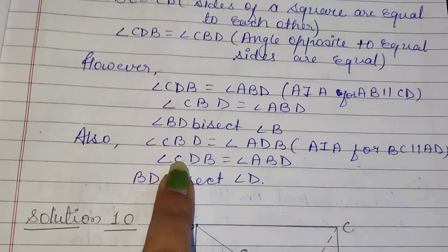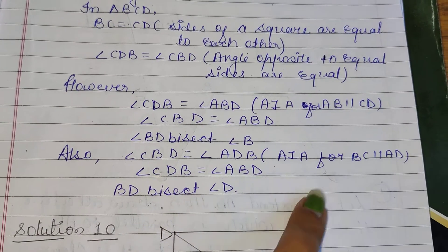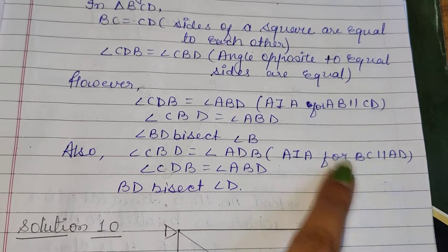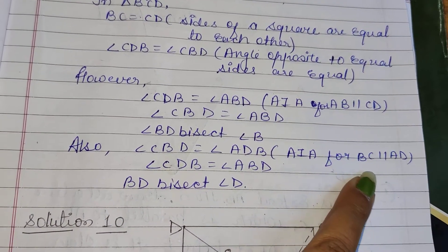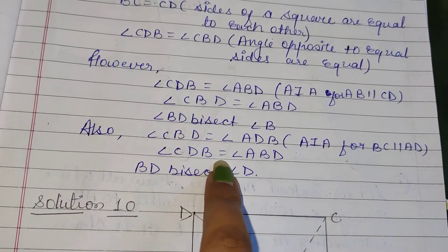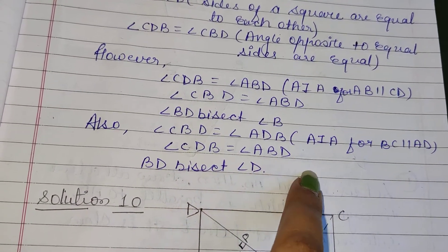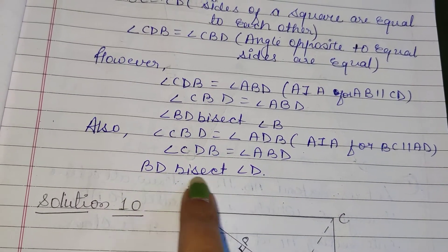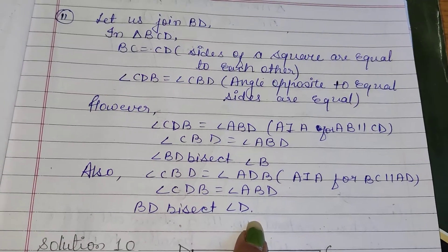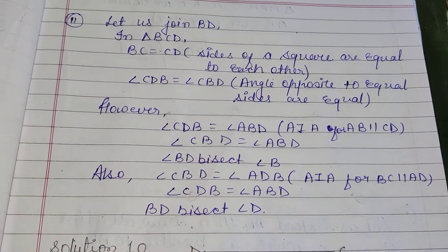Also, we can write angle CBD is equal to angle ABD — alternate interior angle for BC parallel AD. So angle CDB is equal to angle ABD. Therefore BD bisects angle D, and BD bisects angle B as well as angle D.